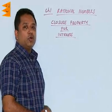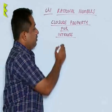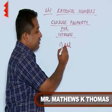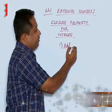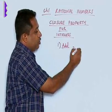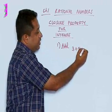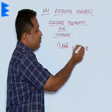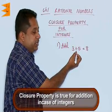Now, let us consider the closure property for integers. First, let us consider the addition of two integers. When we add two integers, let us say 3 and 5, both are integers, we get the result as 8. Now, 8 is also an integer. So, we can say the closure property holds good in case of addition for integers.